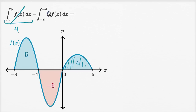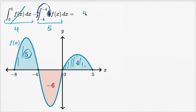Let's just take this two outside. Then this becomes the integral from negative eight to negative four of f of x, which evaluates to five — that's the area they're describing. So this all simplifies to four minus two times five. Four minus ten equals negative six.